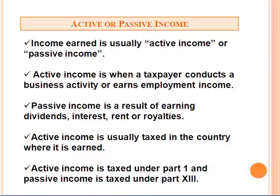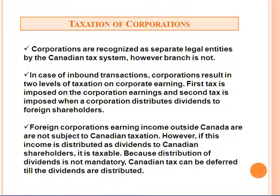Income earned is usually either active income or passive income. Active income is when a taxpayer conducts a business activity or earns employment income. Passive income is a result of earning dividends, interest, rent, or royalties. Passive income is usually taxed in the country where it is earned. Active income is taxed under Part 1 of the ITA, and passive income is taxed under Part 13.